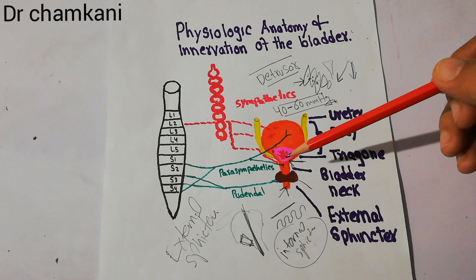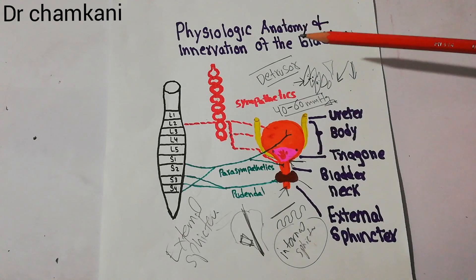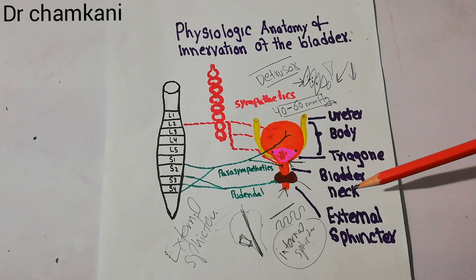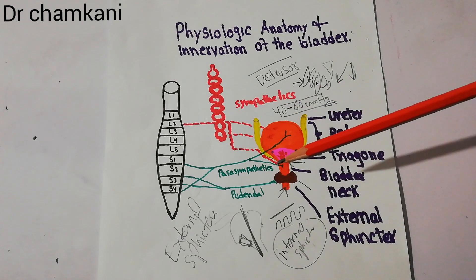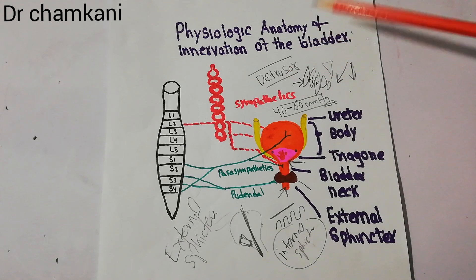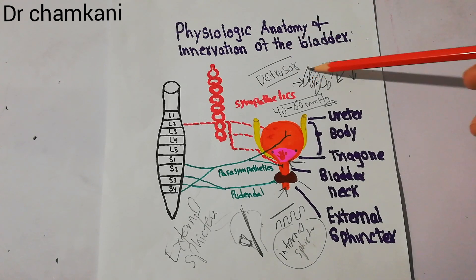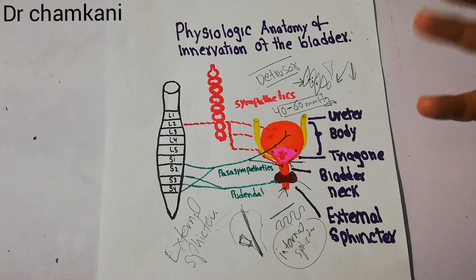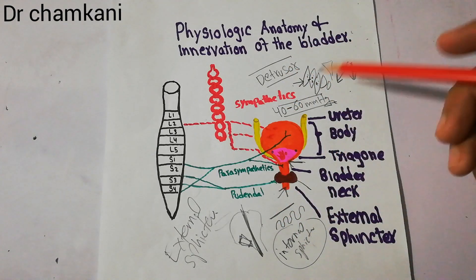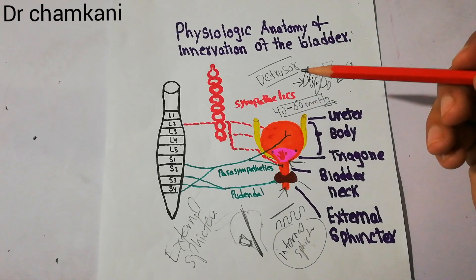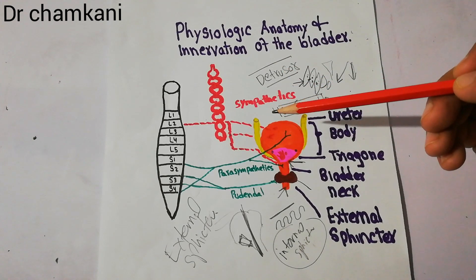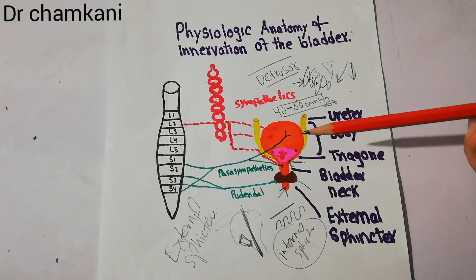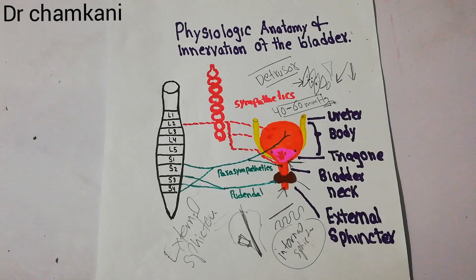The internal sphincter is not in the control of human beings. In summary, the urinary bladder has a body, a neck, a urethra, an internal sphincter, an external sphincter, and a trigone. The internal sphincter is not under voluntary control while the external sphincter is. The body is made of detrusor muscles whose cells are connected with low resistance, allowing simultaneous contraction and generating pressure up to 40 to 60 mmHg to push out urine. The bladder receives urine via the ureters, which enter the wall of the bladder and open inside it.